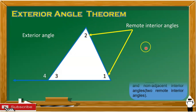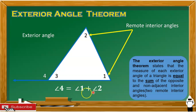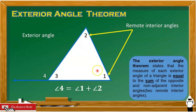The exterior angle theorem states that the measure of each exterior angle of a triangle is equal to the sum of the opposite and non-adjacent interior angles. So let's have this equation: angle 4 is equal to angle 1 plus angle 2. Meaning, the measurement of angle 4 is equal to the sum of the two remote interior angles.